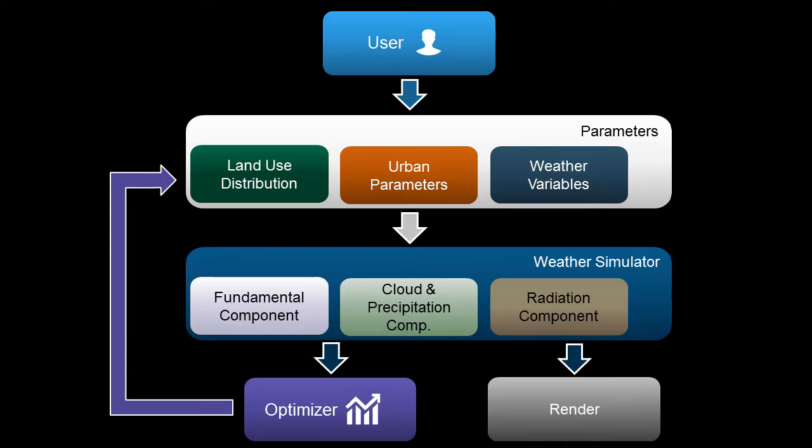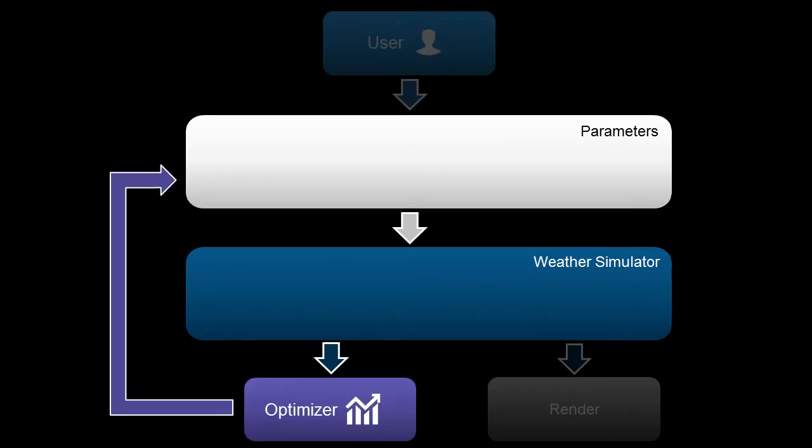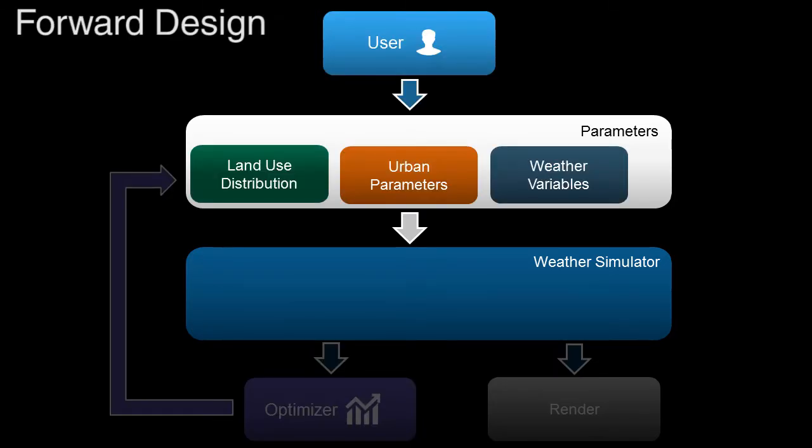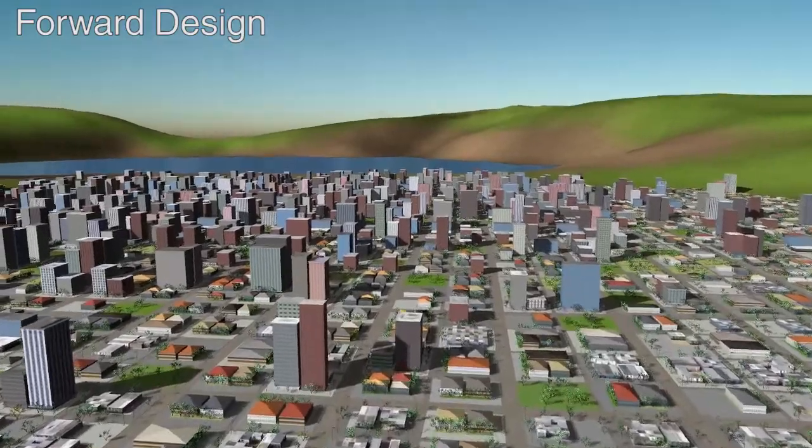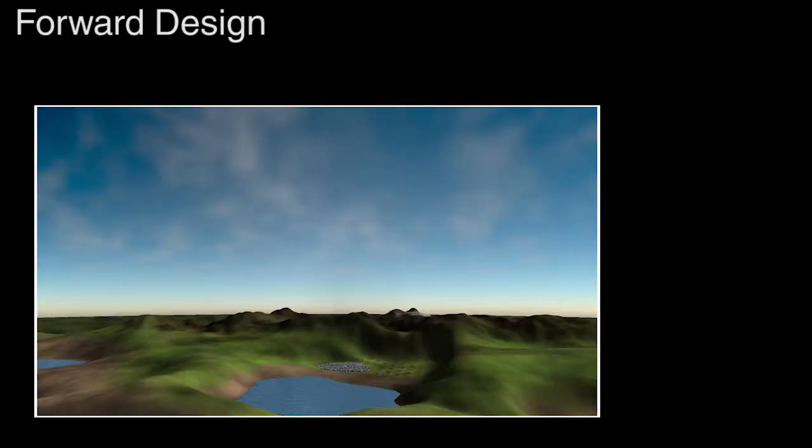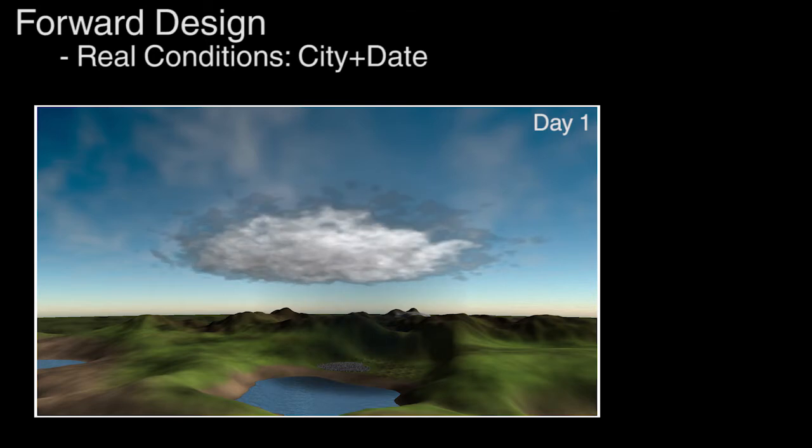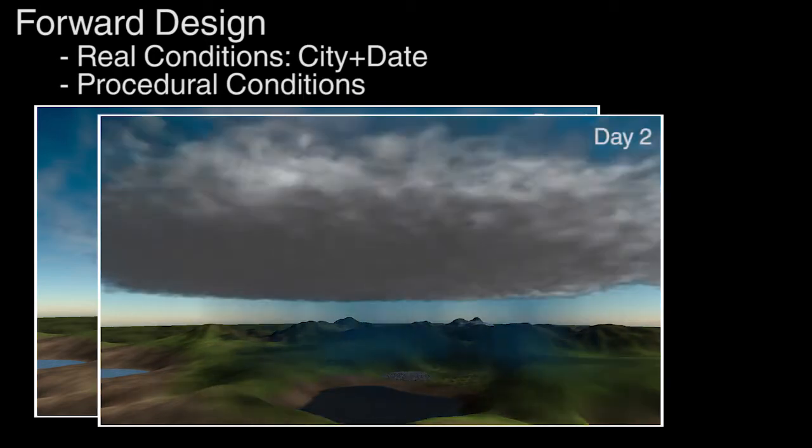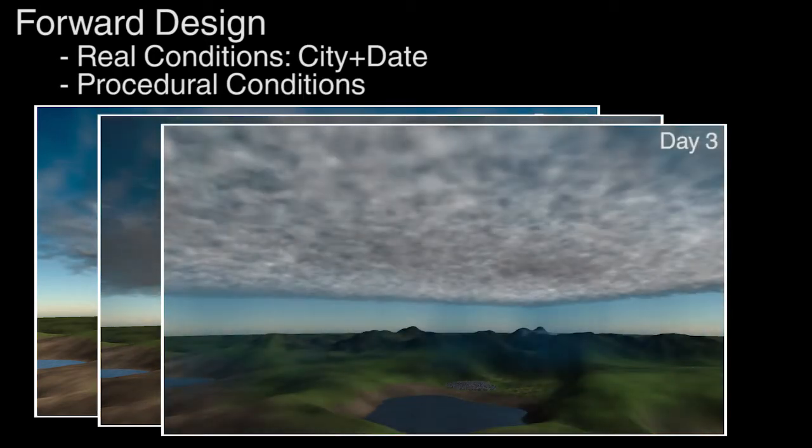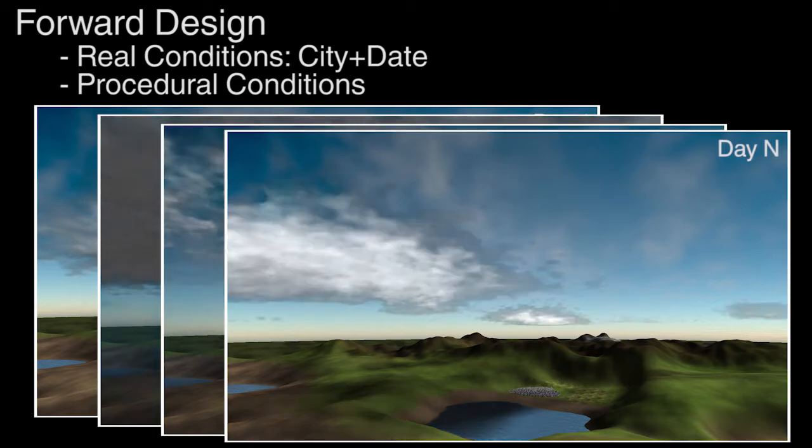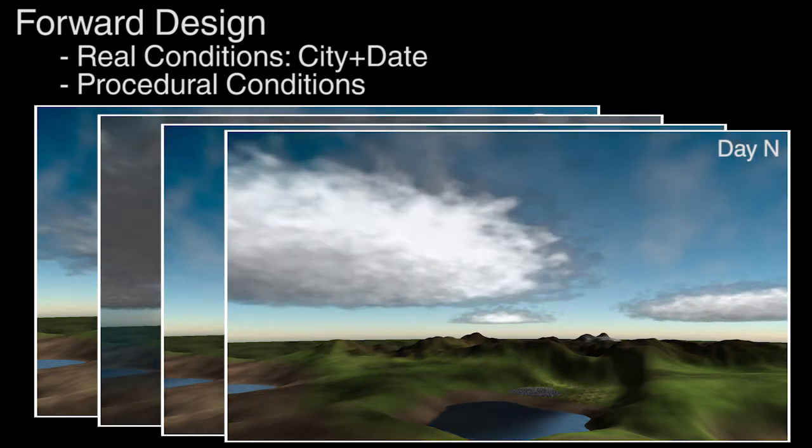To design the urban model and weather, we provide two approaches: a forward design and an inverse design tool. In forward design, the user draws the land use and designs the 3D urban model. Then the user selects real-world based or procedural initial weather conditions. Our system is able to simulate any number of days of realistic weather.